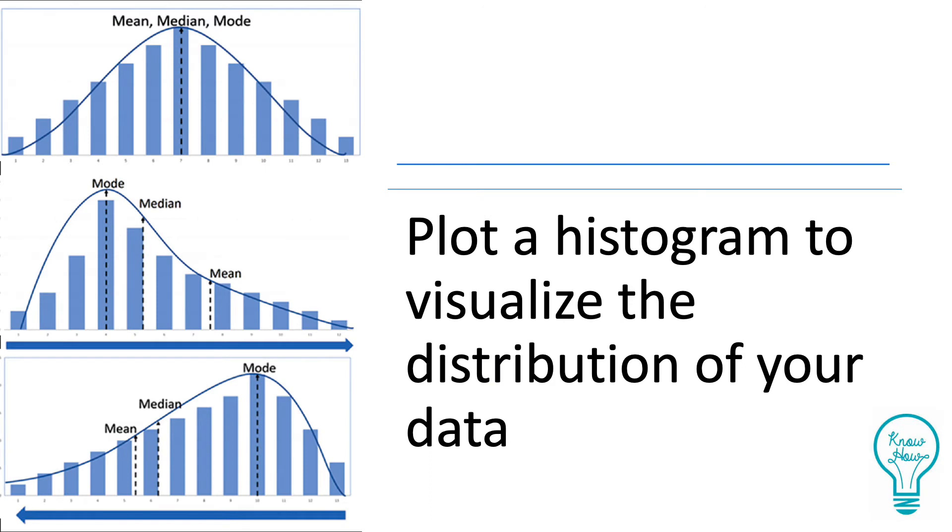The fastest way to know whether your data is normally distributed is to visualize your data first using a histogram. As you can see from the top picture, this data follows a normal distribution with uniform variance and a centered mean, median, and mode.